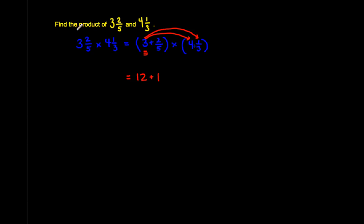Next, I'm going to multiply the next term — two-fifths — by each of the terms in the other group as well. This is another application of the distributive property, which we use all the time in multiplication. So two-fifths times four: two times four is eight, giving us eight-fifths.